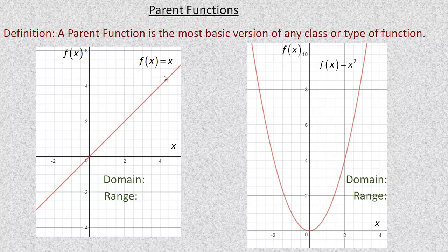For the linear function f(x) = x, I can put any value in place of x. It's just the y = x function, so the domain is the entire set of real numbers. We write that as x is contained in the set of real numbers — that's what the funny R symbol means. Graphically, the graph exists for any x value, no matter how far you go in either direction.